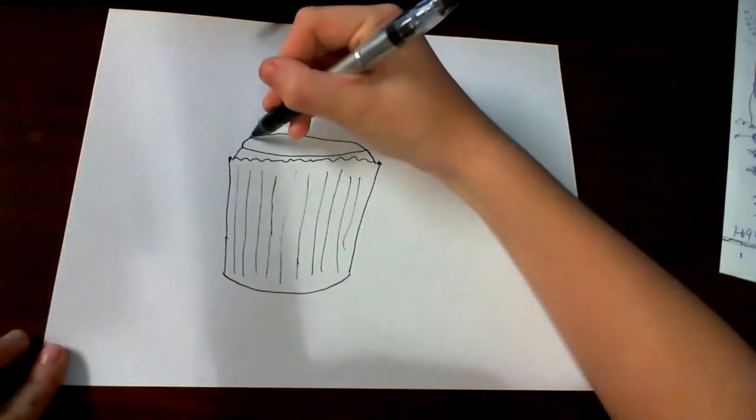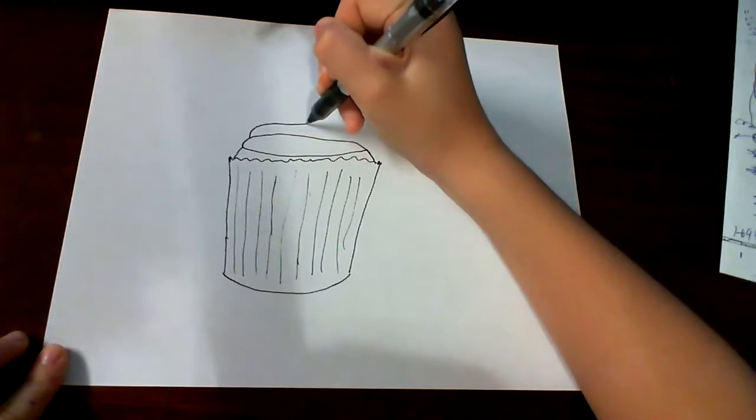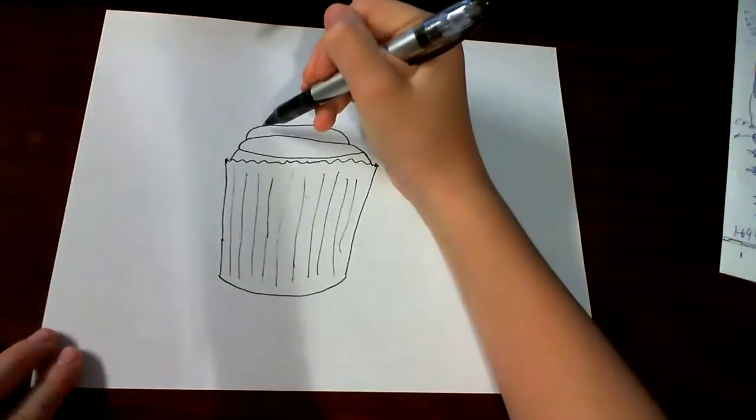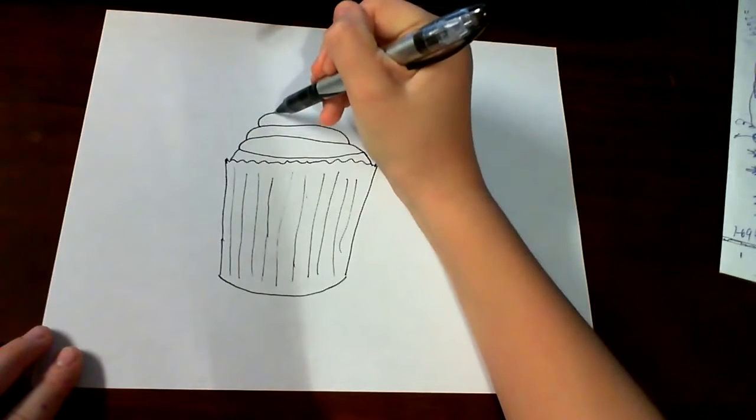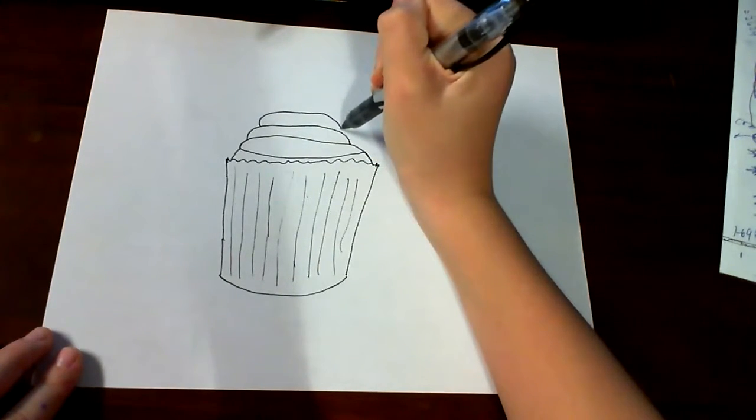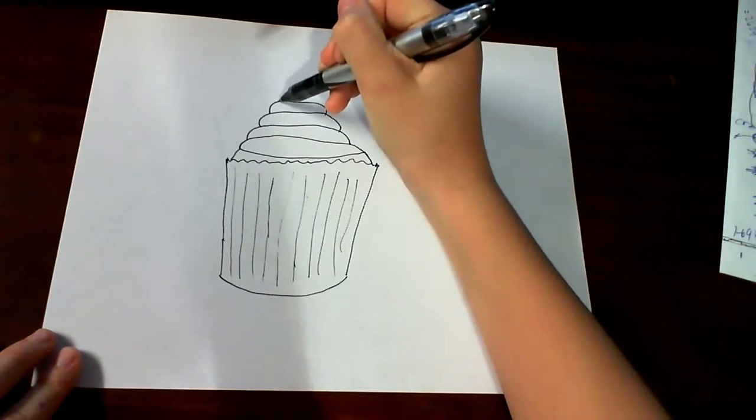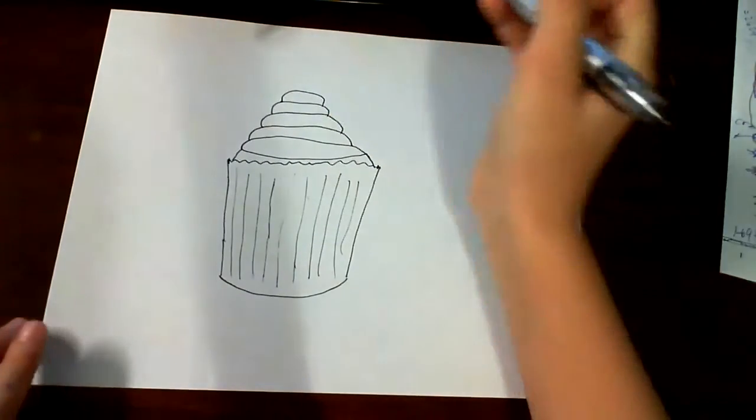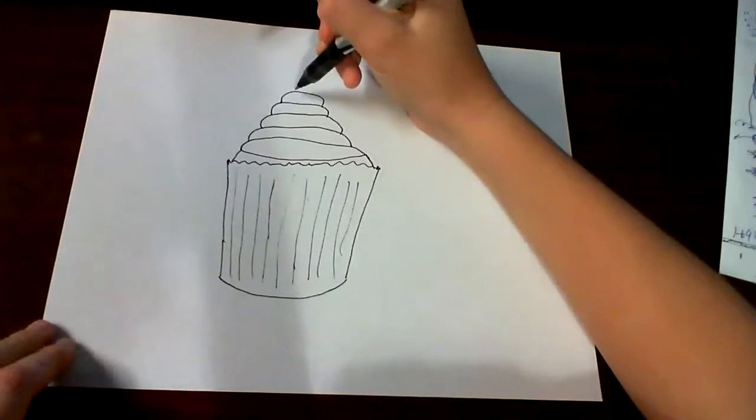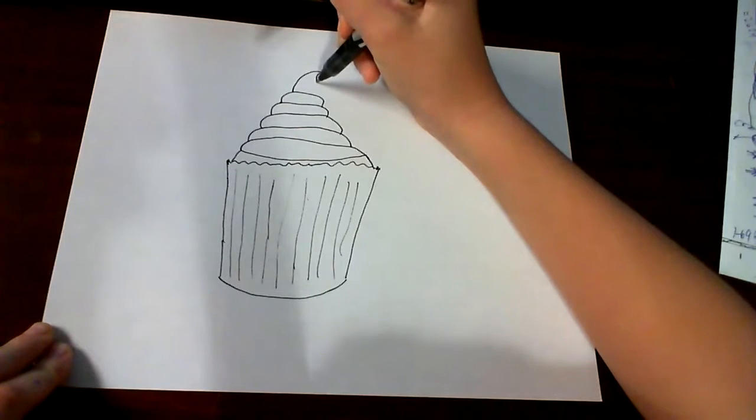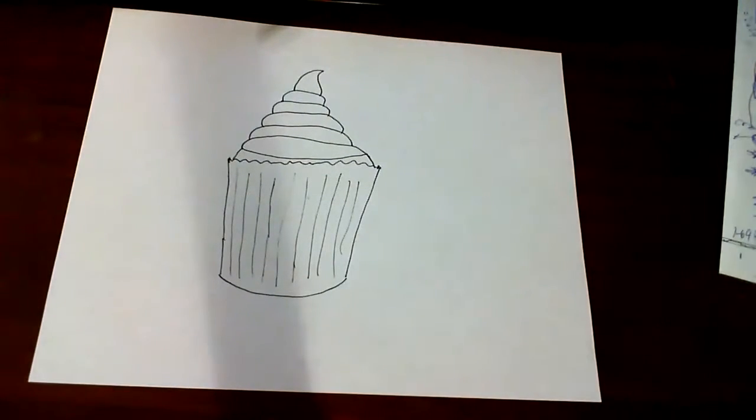And then what you do is you make the second layer. And then you can make a third layer, and then you can make a fourth layer. You can make a fifth layer, but you don't have to make that many layers. But for the last one, either way, you're going to have to make a little thing like that.